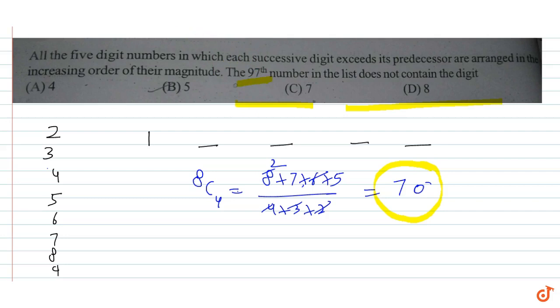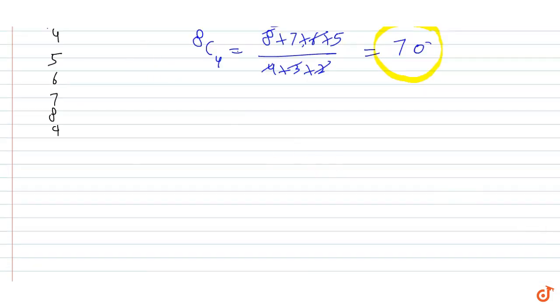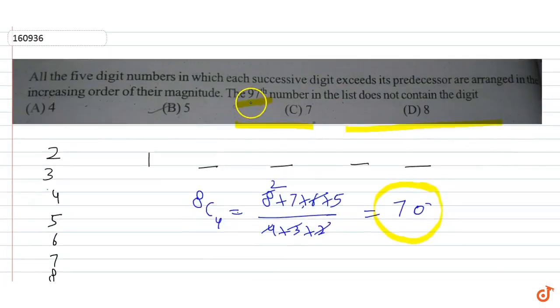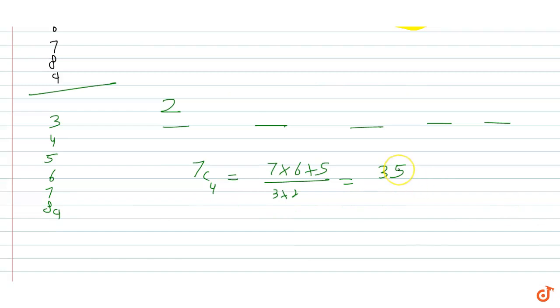So we have 70 numbers which will start from 1. But we need to find the 97th number. So 1 is all covered. Now we will find the 27th number. So what will happen after this? The next number we have 2. So if we look at 2, how many choices have been? 3, 4, 5, 6, 7, 8, and 9. So 7 choices. So if I choose 4, then 7C3 is 7 into 6 into 5 upon 3 into 2, which is 35. So the whole 35 is not used for our use.